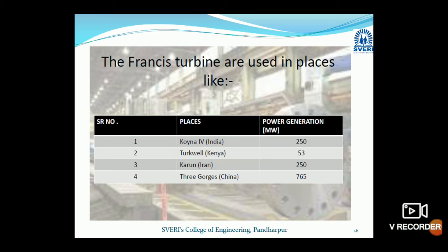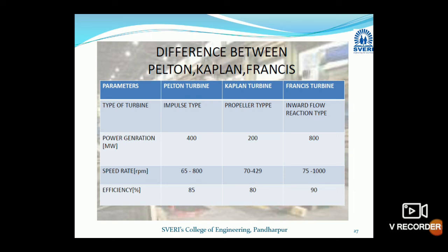Francis turbines are used in different places. Koyna Dam in Maharashtra uses a Francis turbine generating 250 megawatts. Turkwell in Kenya generates 53 megawatts. Karun in Iran generates 250 megawatts. Three Gorges Dam in China uses Francis turbines generating 765 megawatts — China is leading in Francis turbine power generation.